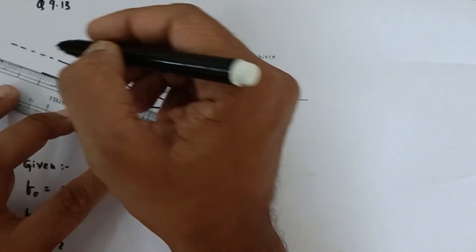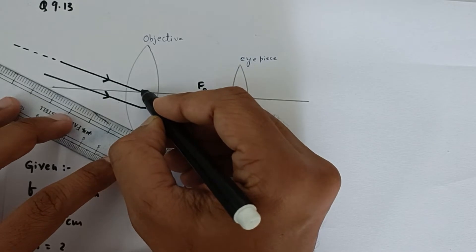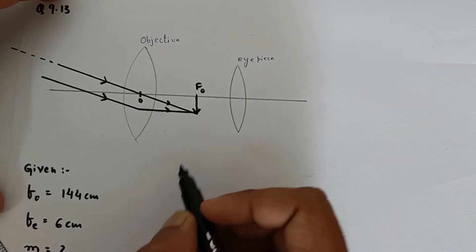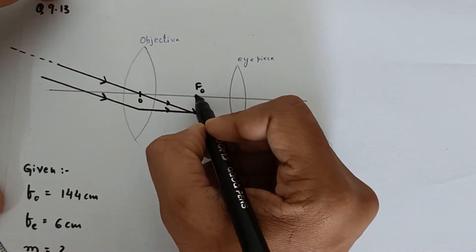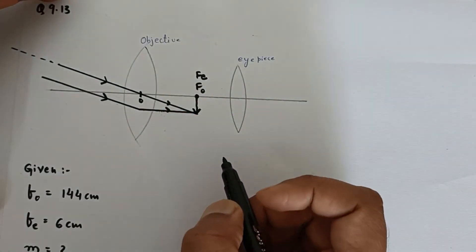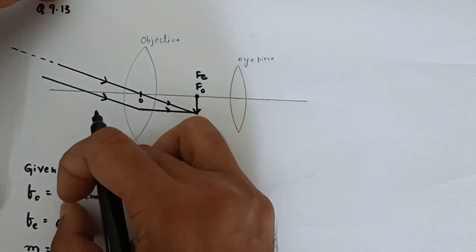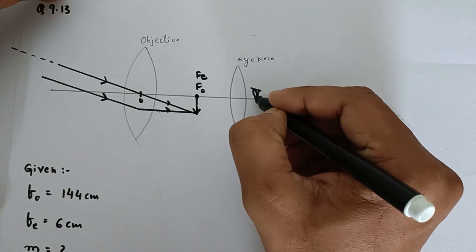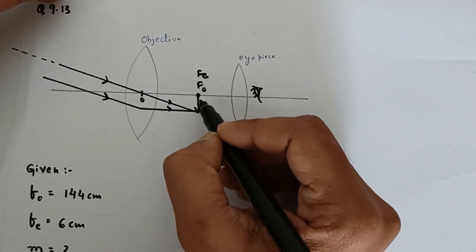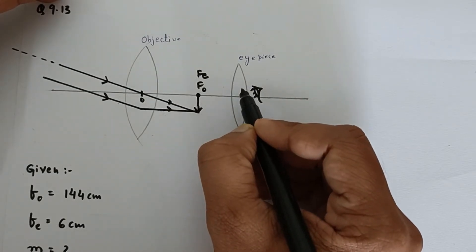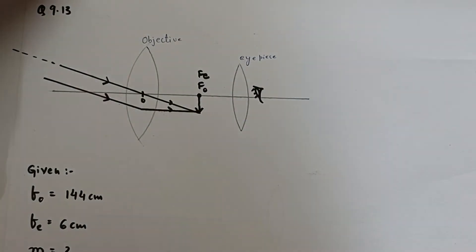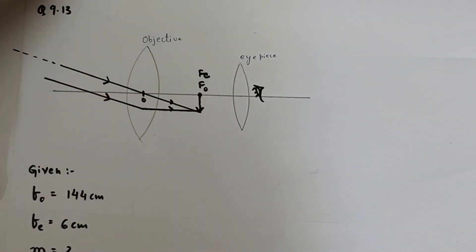So the rays must be parallel, something like this. So the final image is formed on the focal plane, now exactly at this point. The focus of the eyepiece is also located because the final image is formed at infinity. The eye sees the final image at infinity, which means this image is going to behave as the object for this lens, and since this object is placed at the focus of the eyepiece, the final image will be formed at infinity.